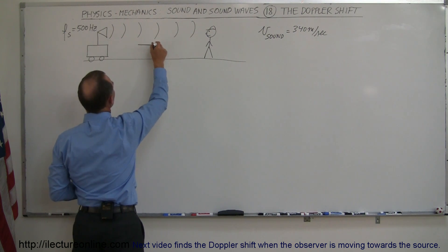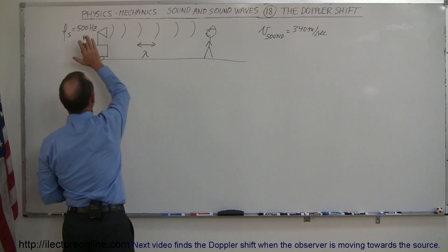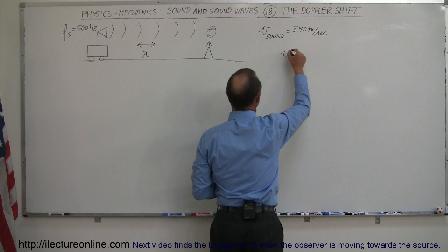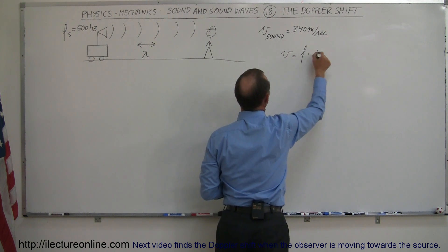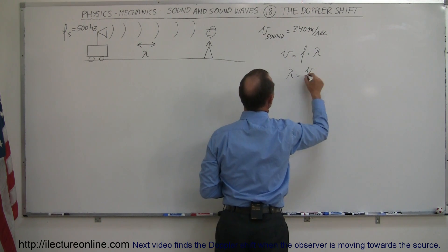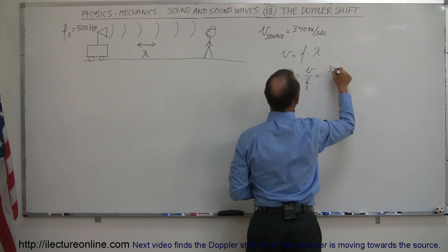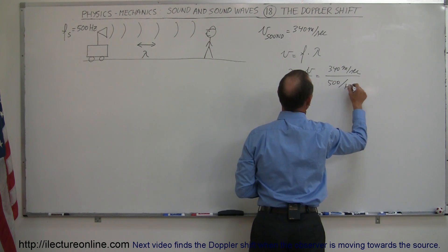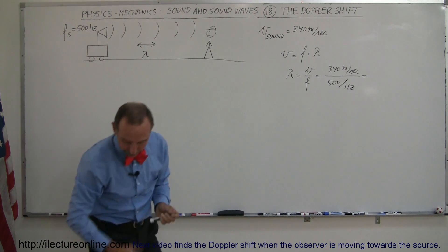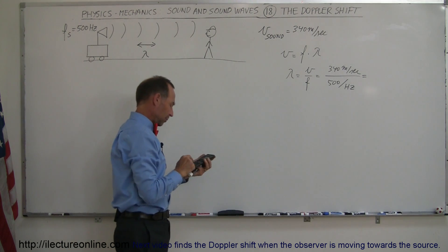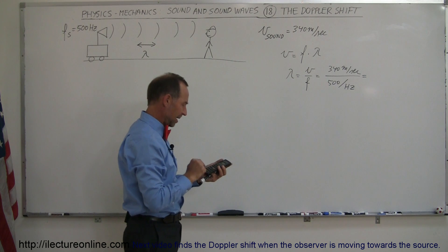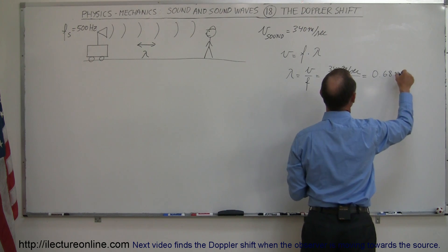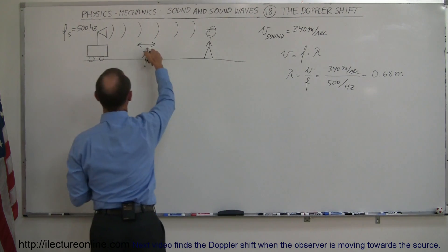The waves will be a distance apart equal to the wavelength. With a frequency of 500 Hz and velocity of sound at 340 m/s, we can say velocity equals frequency times wavelength, so wavelength equals velocity divided by frequency: 340 divided by 500 equals 68 cm, or 0.68 m. That would be the wavelength.